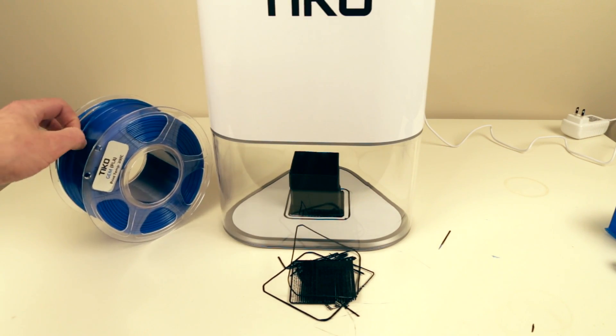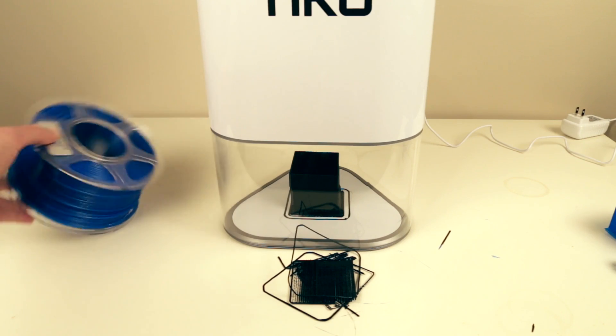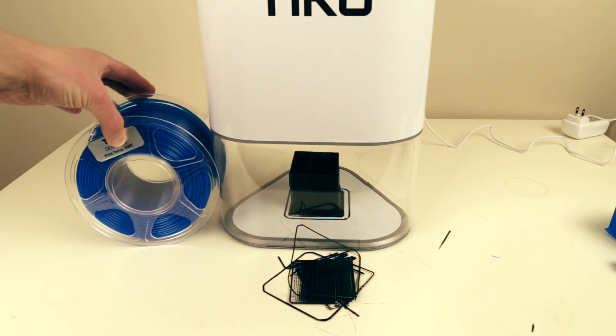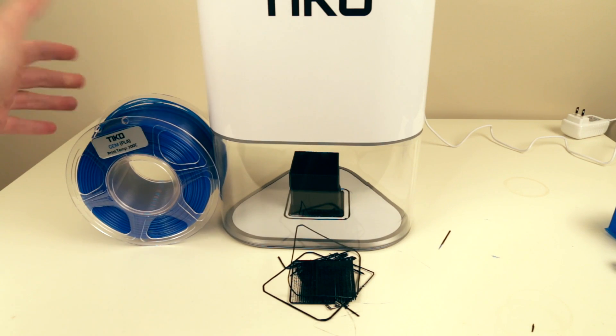Also another problem. It breaks. It's all very brittle. It can often break inside the Bowden tube, which leads, which takes the filament from the container above to the printing head or to the extruder. And it breaks pretty often.